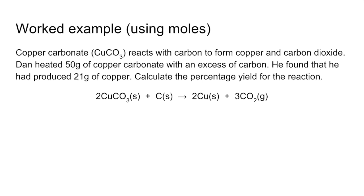Copper carbonate reacts with carbon to form copper and carbon dioxide. We're told that Dan uses 50 grams of copper carbonate with an excess of carbon and finds that he makes 21 grams of copper. From that information we're going to calculate the percentage yield for the reaction. We've got the balanced chemical equation there.